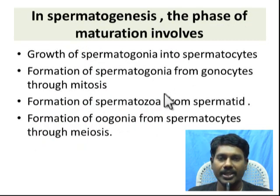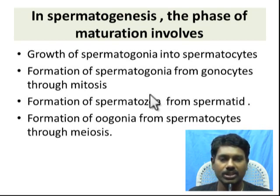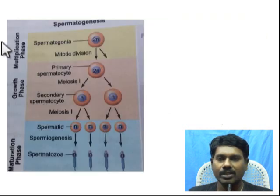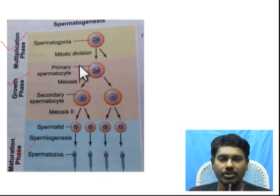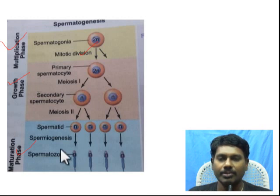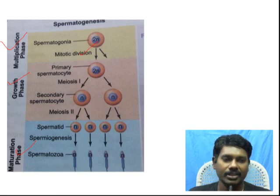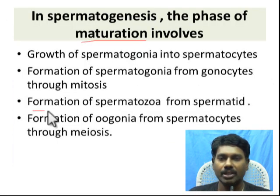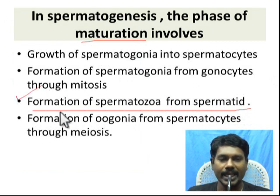Next question: In spermatogenesis, the phase of maturation involves what? There are three phases in spermatogenesis and oogenesis: multiplication phase, growth phase, and maturation phase. In spermatogenesis, primary spermatocytes form during the multiplication phase (mitotic division). In the growth phase, primary spermatocytes undergo meiosis 1 and meiosis 2, leading to spermatid formation. The conversion of spermatid to spermatozoa (sperm production) is the maturation phase. So the third option is the right answer.